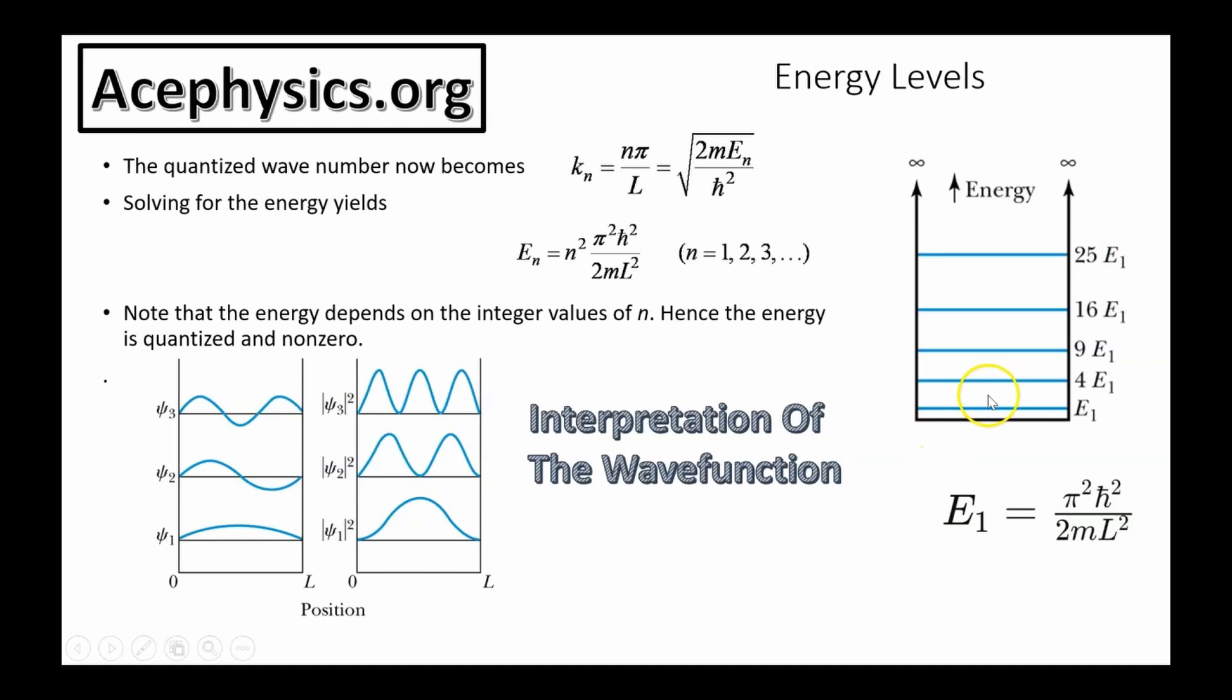So you can have energy of E1, which is this number here. It depends on the mass of the particle and the length of the particle and Planck's constant. Or you could have four times E1 or nine times E1. You cannot have 10 times E1. That's not an allowed energy. The first thing that we've learned is in a quantum mechanical bound system, the energies are quantized. And of course, the most important example of this is an atom where the electrons in atoms have these quantized energy levels.